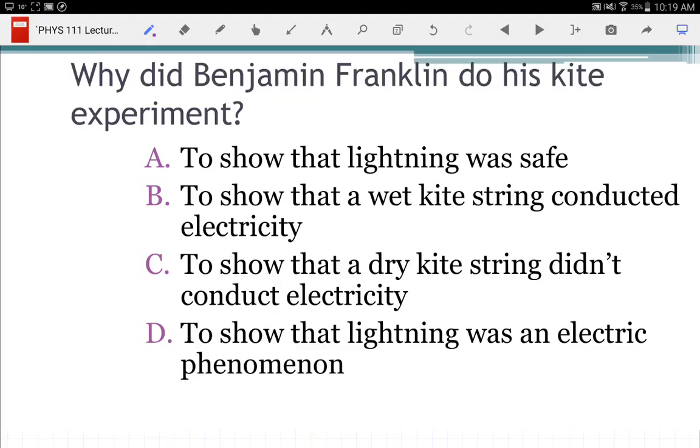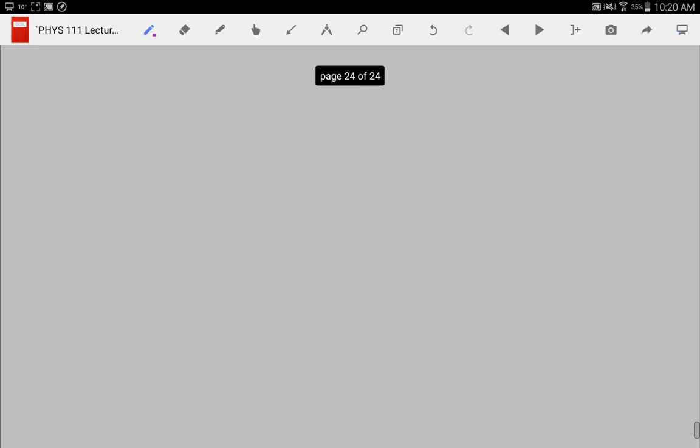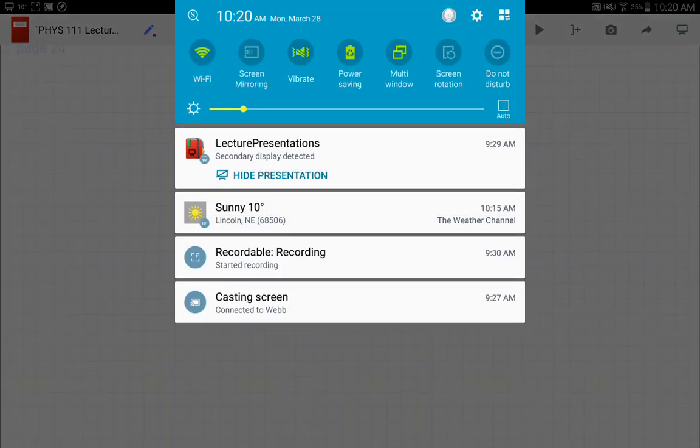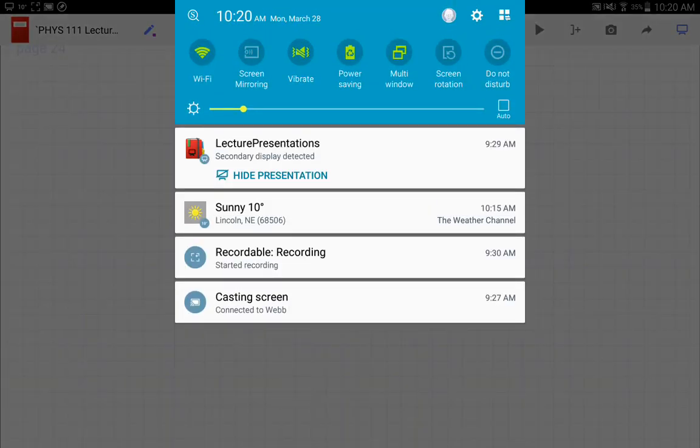So, a question here about Benjamin Franklin. Why did he do his kite experiment again? If he did it. Everybody said the right answer. No one said to show that lightning was safe. That's good. Because it's not safe. Those were kind of silly. Thank you for answering correctly. That's the end. Have a great day. I'll see you in the lab this afternoon.